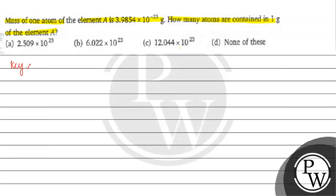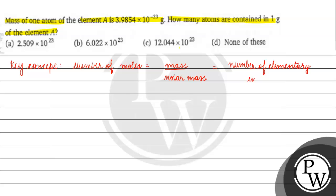The key concept for this question is: number of moles equals mass of substance by molar mass. Number of moles also equals number of elementary entities by Avogadro's number, which is 6.022 into 10 raised to the power 23 per mole.